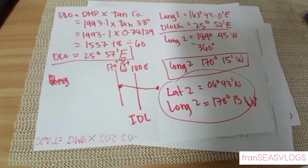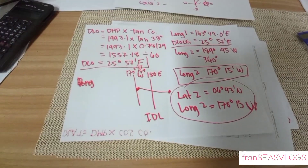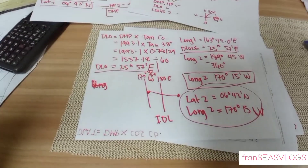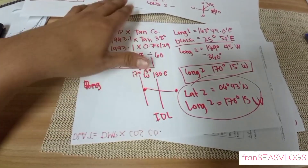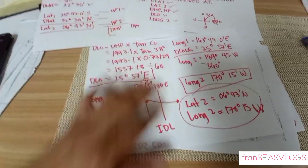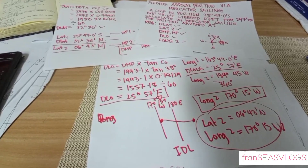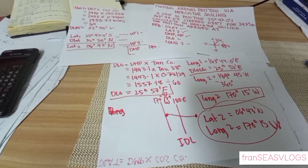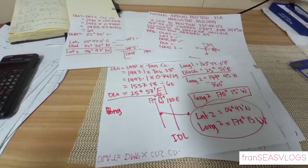And that's it guys — that's about finding the arrival position via Mercator Sailing. If you have questions, clarification, or correction, do not hesitate to comment in the comment section and let's try to recompute again. Or any suggestions for videos you want me to make, let's try. Don't forget to subscribe, like, and hit the notification bell for updates on new videos. Thank you so much and bye bye!